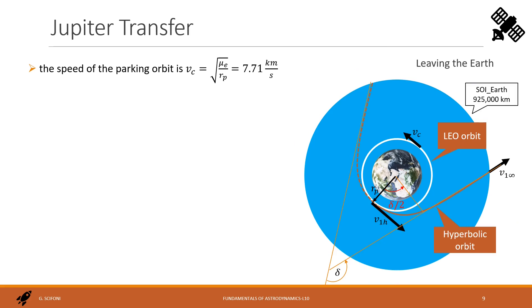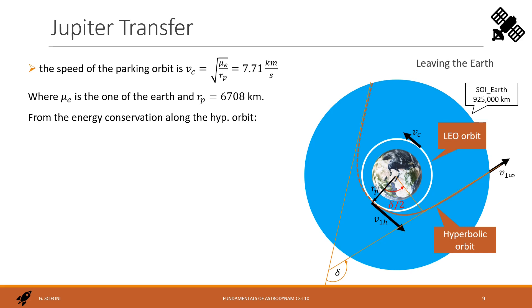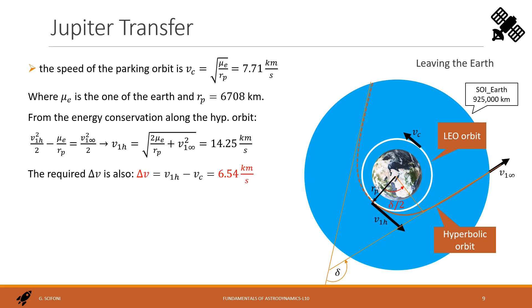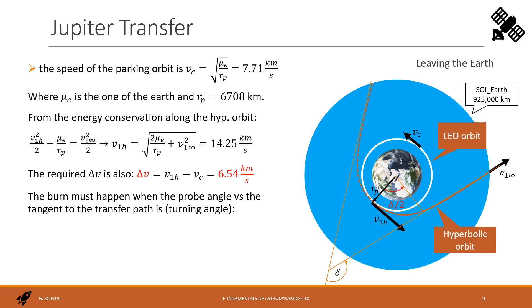The speed of our LEO orbit is 7.71 km/s. We look for a hyperbolic launch in order to leave Earth's gravity. The velocity we need to achieve is V1_infinity calculated previously. From energy conservation, we find the launch speed at periapsis R_P, that is 14.25 km/s. The delta-v is the difference between that velocity and the circular orbit velocity: 6.54 km/s. The turning angle is 24.45 degrees.